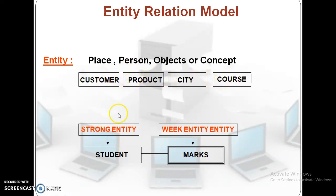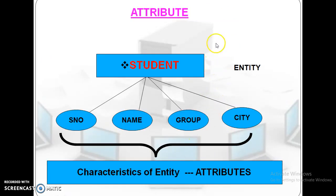Here, the strong entity and the weak entity. The strong entity means the main entity, and the weak entity means marks. The marks entity depends on student, so that's why we are calling marks a weak entity, and it is denoted with double-line rectangle.